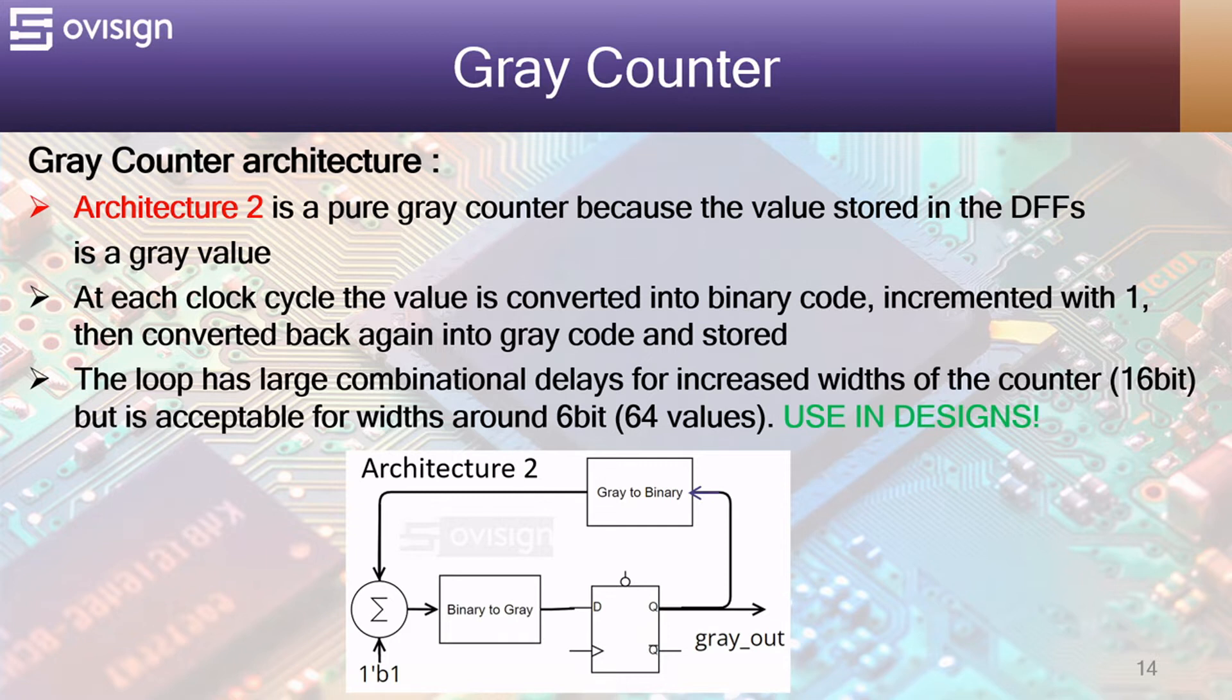Architecture 2 is a pure gray counter because the value stored in the D flip-flops is a gray value. At each clock cycle the value is converted into binary code, incremented with one, then converted back again into gray code and stored.